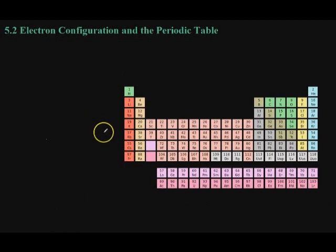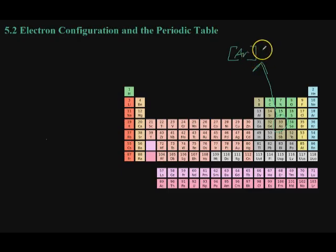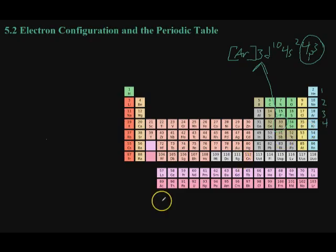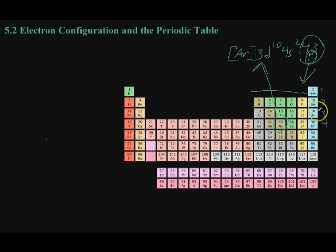An element's electron configuration also gives its period and location on the table. For example, let's take element 33 — arsenic. Using noble gas notation, arsenic has the electron configuration [Ar] 3d10, 4s2 4p3. The highest energy level that arsenic has electrons in is the fourth, and non-coincidentally it is in the fourth period. You'll also notice that the highest sub-level that electrons in arsenic occupy is the p sub-level, which is the same for all elements in what is known as the p-block.